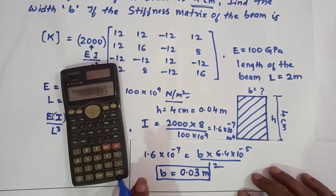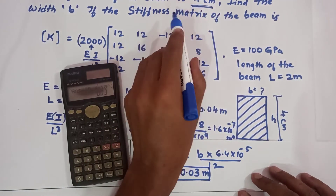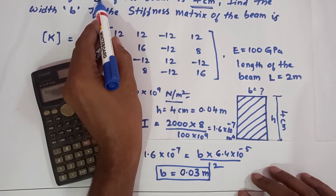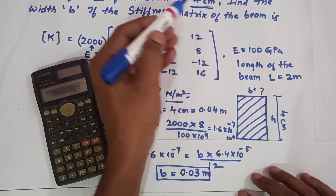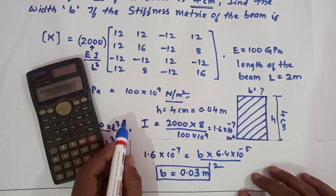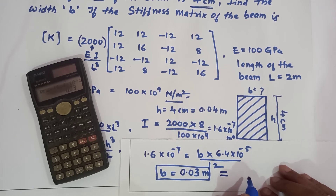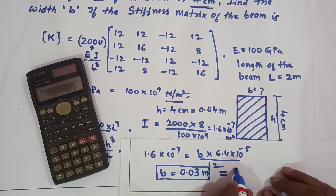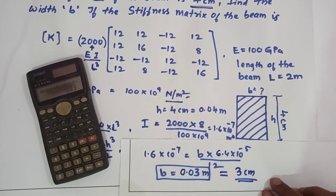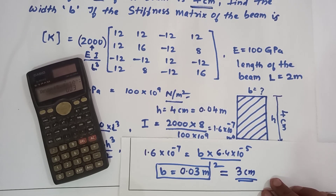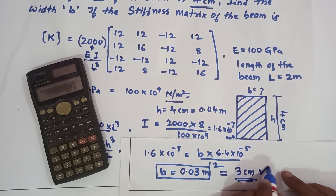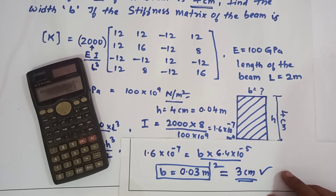Since all parameters were substituted in meters, the result 0.03 meters can be converted back to centimeters: B = 3 centimeters. So the width of the beam is 3 centimeters. That is the answer.